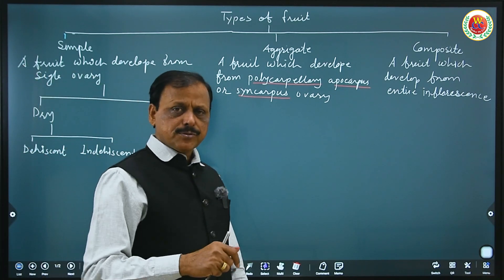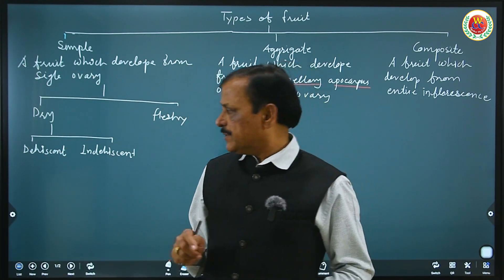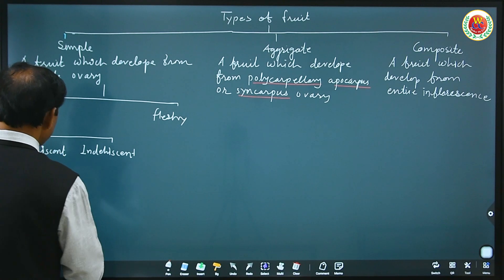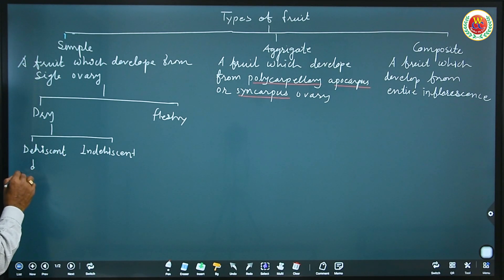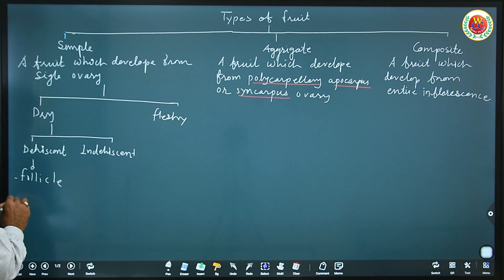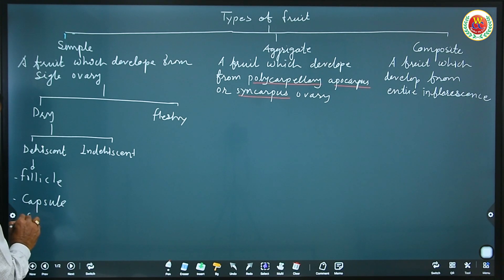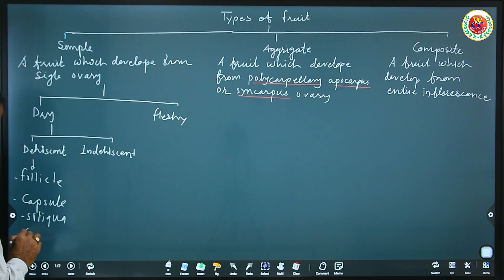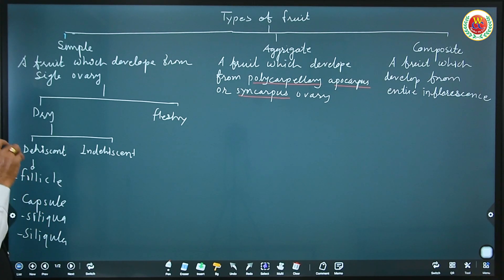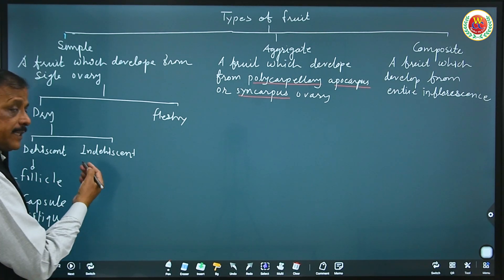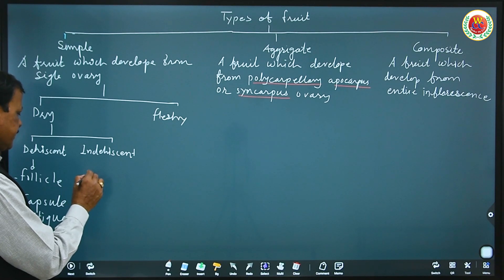Dehiscent means at maturity the fruit breaks open, and indehiscent means it does not break open. Dehiscent fruits include follicle, capsule, siliqua, and silicula, and so on.